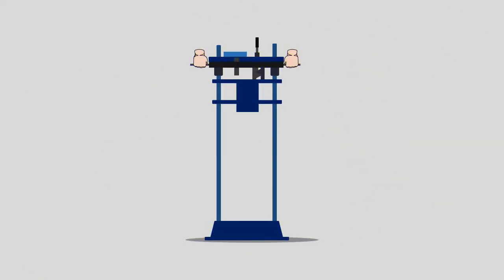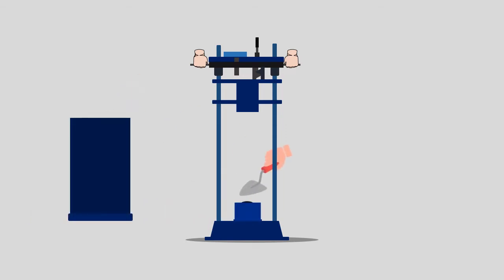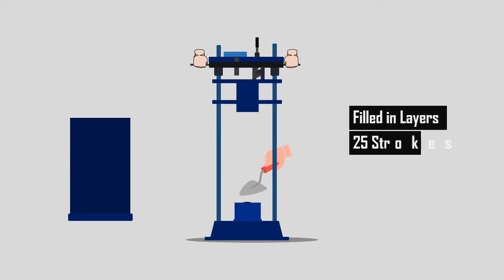The impact machine is placed on the leveled surface such that it remains rigid upon impact vibration. The cup is placed firmly positioned on the base of the machine and the test sample is placed on it in layers and each layer is compacted by 25 strokes.